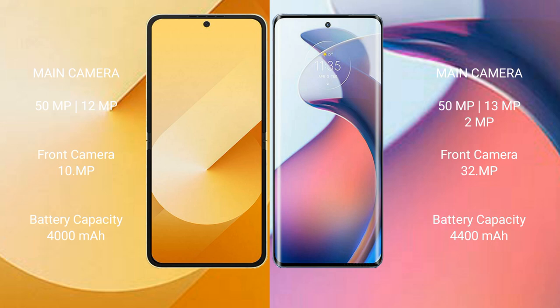The Samsung Galaxy Z Flip 6 features a dual camera setup with a 50MP main camera and a 12MP camera. The front camera is 10MP. The Motorola Moto S30 Pro features a triple camera setup with a 50MP main camera, 13MP, and 2MP lenses, along with a 32MP front camera.